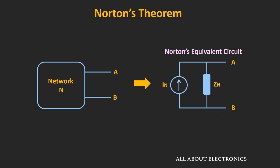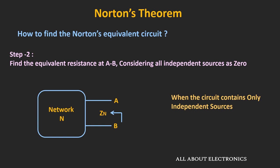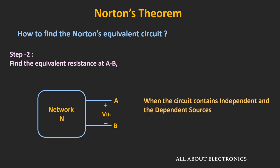Now let's see the steps to find the Norton's equivalent circuit for any network. First, find the short-circuit current between terminals A and B. In the second step, if the circuit contains only independent sources, zero all sources and find the Norton's equivalent resistance between terminals A and B. But if the circuit contains both independent and dependent sources, then directly finding the equivalent resistance isn't possible. In that case, first find the open-circuit voltage or Thevenin's equivalent voltage across the two terminals, and the ratio of this open-circuit voltage to the short-circuit current gives the equivalent impedance.